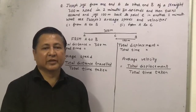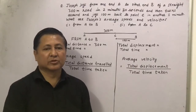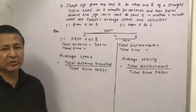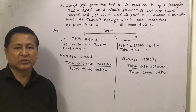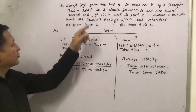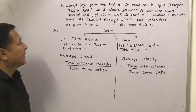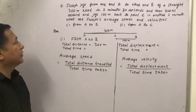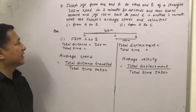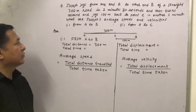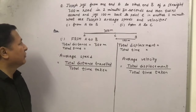Hello students. Yesterday we did a question based on average speed and average velocity. Today we will be doing some numericals based on it. Joseph jogs from one end A to another end B of a straight 300m road in 2 minutes 30 seconds, and then turns around and jogs 100m back to point C in another 1 minute.